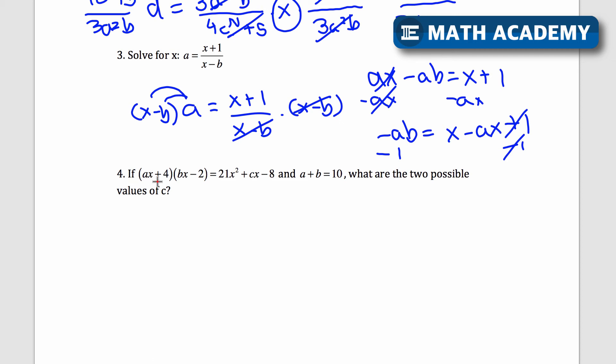Number four, if ax plus 4 times bx minus 2 equals 21x squared plus cx minus 8, and a plus b equals 10, what are two possible values of c? Now, this topic was about rational expressions and equations. This one actually isn't a rational expression equation, but I'm just sticking it on here to show some algebra work that you can do to this equation. This type of problem does come up a lot of times on the SAT, practice tests at least, that I've seen. And the key is to get both sides into standard form.